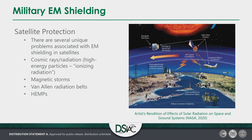Satellite protection is another major area — the next great field outside of Earth, where Space Force and the Air Force need to operate in a consistent and assured way. There are several unique problems with EM shielding in satellites that don't occur on Earth: we can no longer claim Earth's magnetic field and atmosphere as protection. Cosmic rays, radiation, high-energy particles, and ionizing radiation must be specifically dealt with. Magnetic storms from the sun must be dealt with. Damage can occur from Earth's own Van Allen radiation belts. And you need to defend against high-altitude EMPs associated with a nuclear blast.